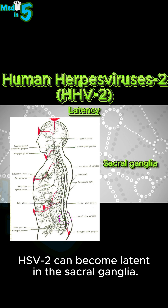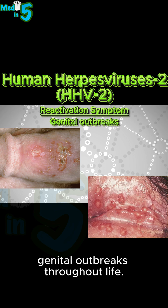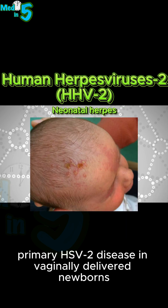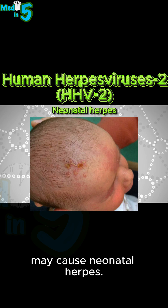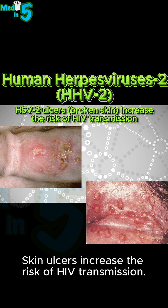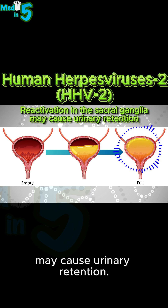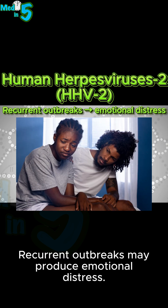HSV-2 can become latent in the sacral ganglia. Reactivation can cause recurring genital outbreaks throughout life. Primary HSV-2 disease in vaginally delivered newborns may cause neonatal herpes. In other individuals, aseptic meningitis can arise. Skin ulcers increase the risk of HIV transmission. Reactivation in the sacral ganglia may cause urinary retention. Recurrent outbreaks may produce emotional distress.